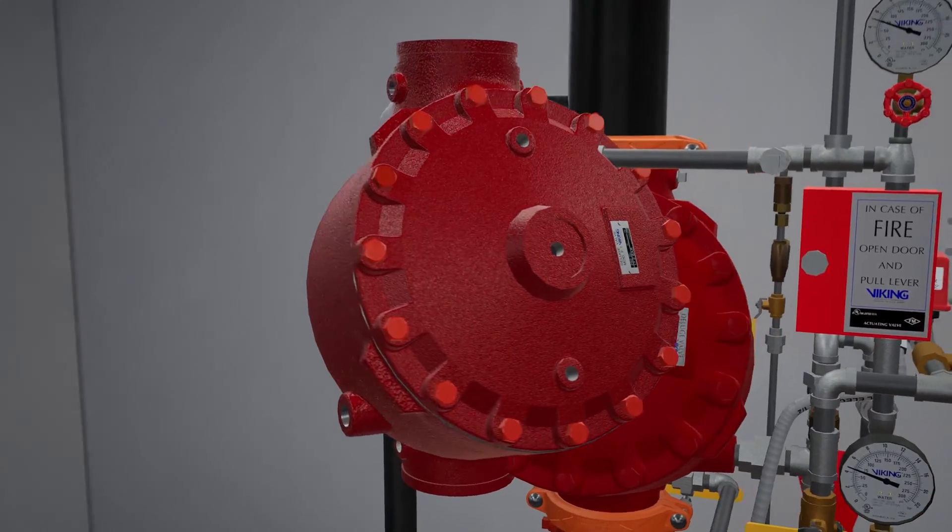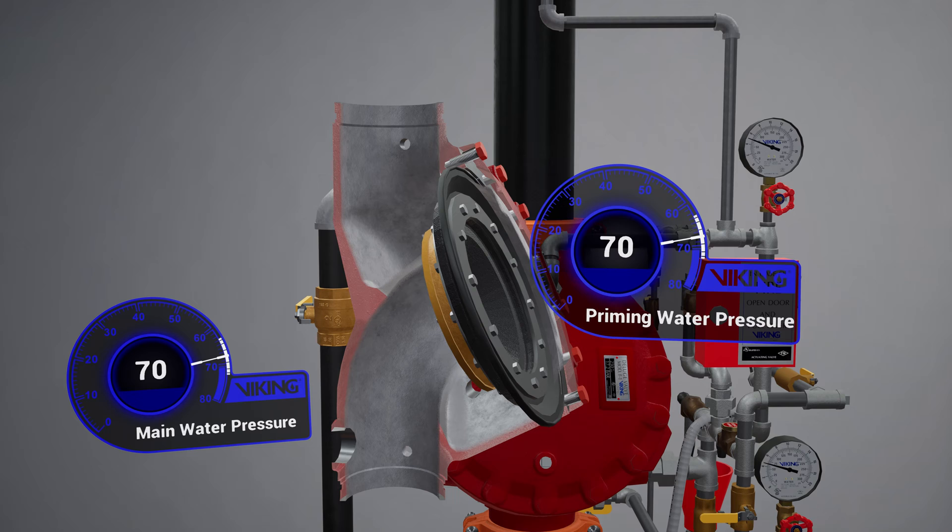The model F1 Deluge Valve is a quick-opening differential diaphragm flood valve with one moving mechanism. The valve is held closed by system water pressure trapped in the priming chamber, keeping the outlet chamber and system piping empty.